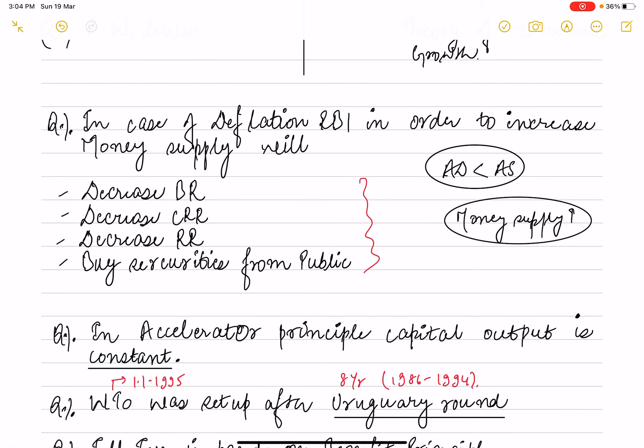In accelerator principle, capital output ratio is constant. So constant, that will be the correct answer.